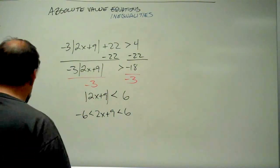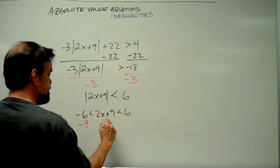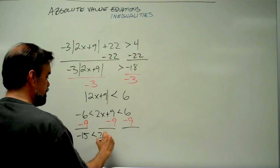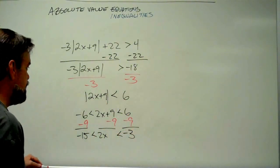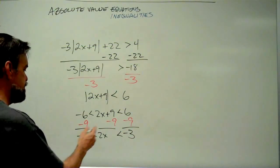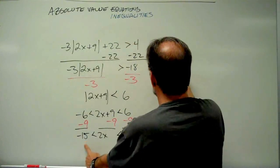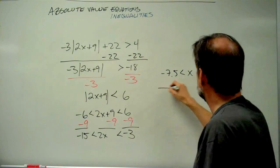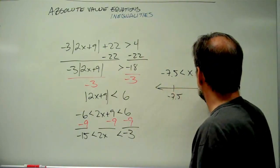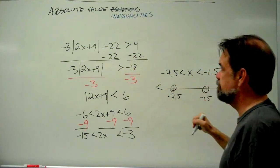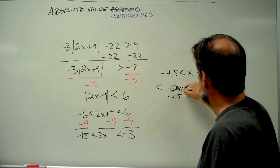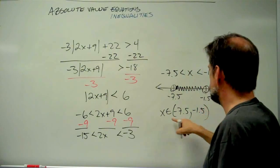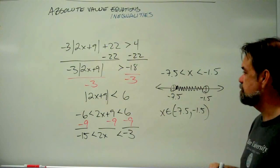Now I have three sides. Subtract 9 from all three sides: negative 6 minus 9 is negative 15, the 9s cancel in the middle, and we get negative 15 less than 2x less than negative 3. Divide everything by 2: negative 15 divided by 2 is negative 7.5, and negative 3 divided by 2 is negative 1.5. So x is between negative 7.5 and negative 1.5. On the number line, open circles at negative 7.5 and negative 1.5, shading in between. In interval notation: x is in the open interval from negative 7.5 to negative 1.5.